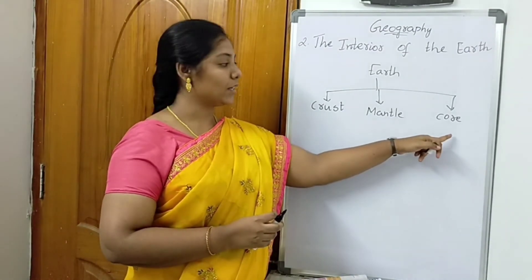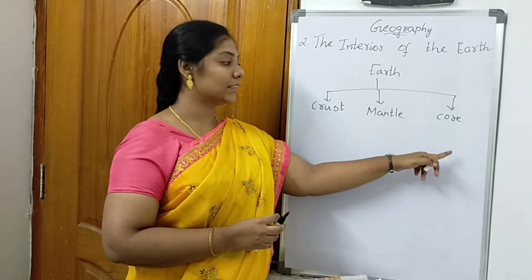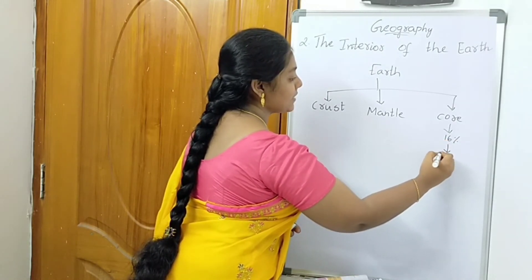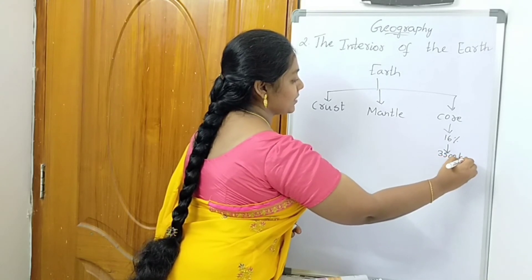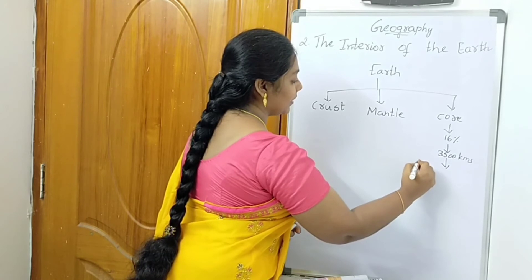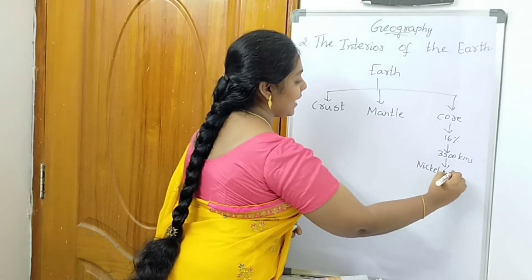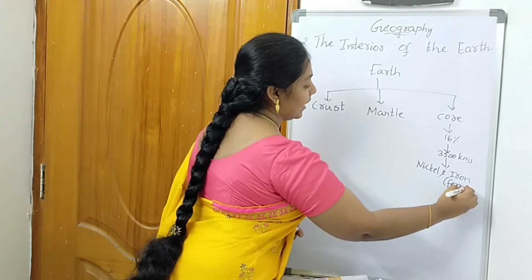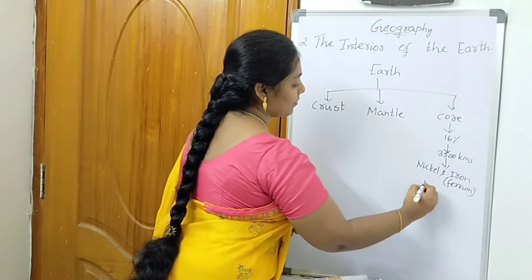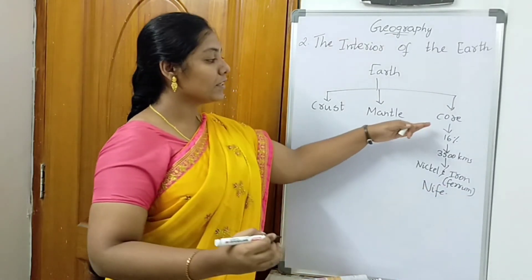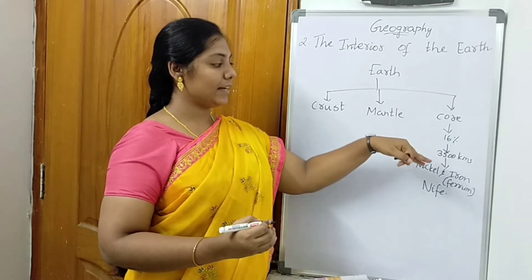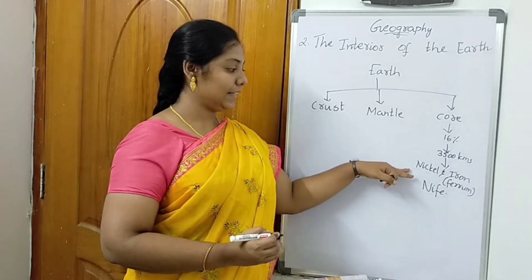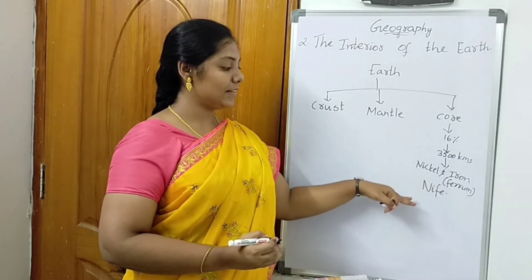The last layer is the core. Core is the innermost layer of the earth, occupying 16% of the earth's volume, and it has a depth of 3500 kilometers. It is having minerals like nickel and iron. The Latin name of iron is ferrum, so nickel plus ferrum together are called nife.